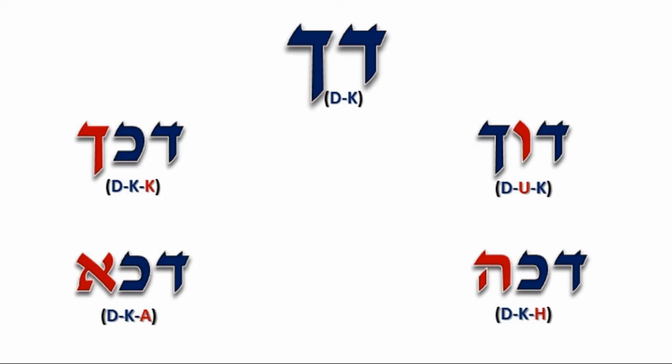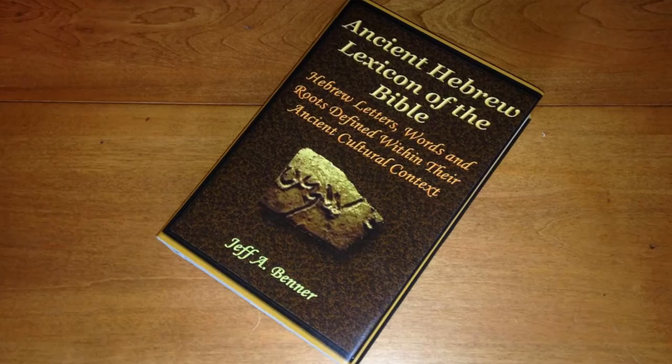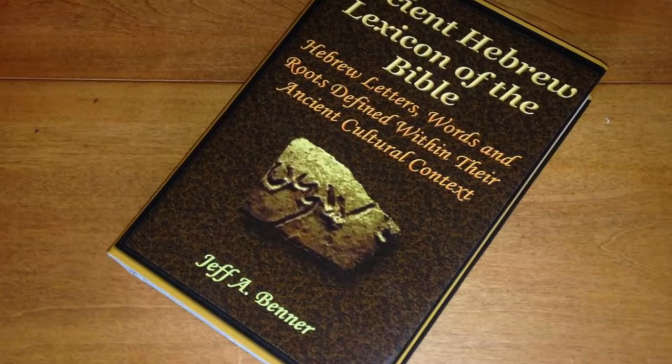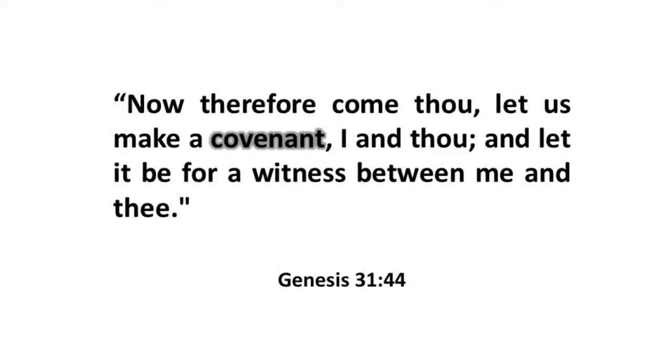While all other lexicons only take Hebrew words back to a three-letter root, the ancient Hebrew lexicon takes words back to their two-letter root. To demonstrate how the ancient Hebrew lexicon works, let's do a word study on the word covenant, identified by Strong's number 1285.